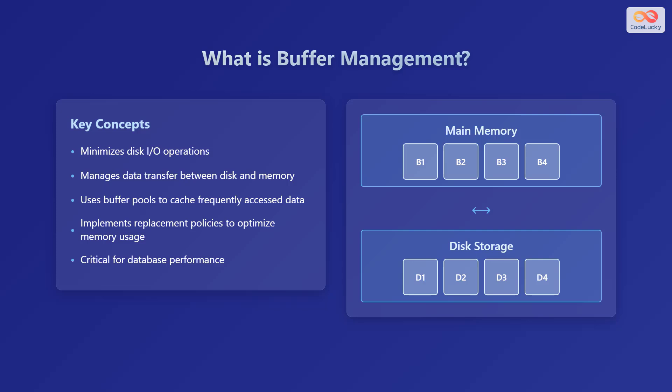Disk I/O refers to reading data from and writing data to the physical disk, which is a relatively slow process. It manages the transfer of data between the disk and main memory, acting as a middleman to reduce the number of times the database needs to access the slower disk.